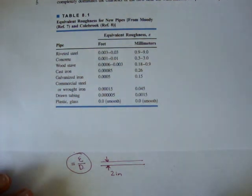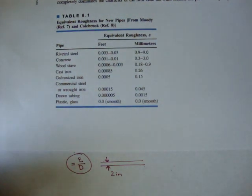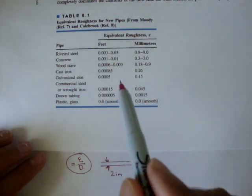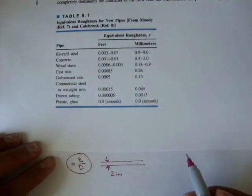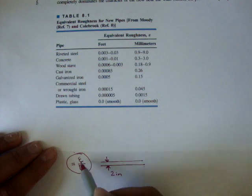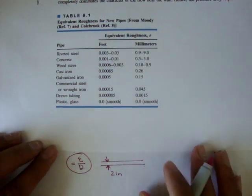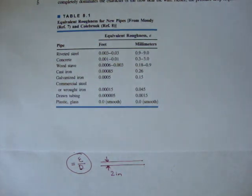So when we have a pipe, and they say what type of pipe it is, what material it's made out of, that should give you a hint to come over here and use this table to find our epsilon values, because we'll need the relative roughness, which is epsilon over the diameter of the pipe, to find frictional factors.